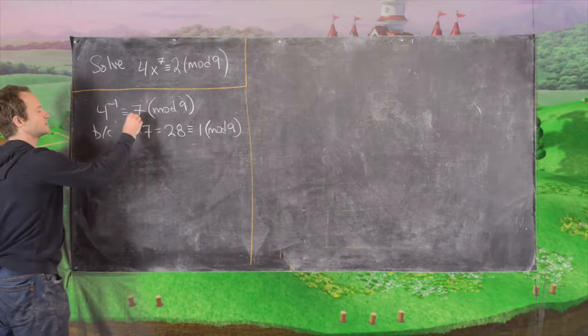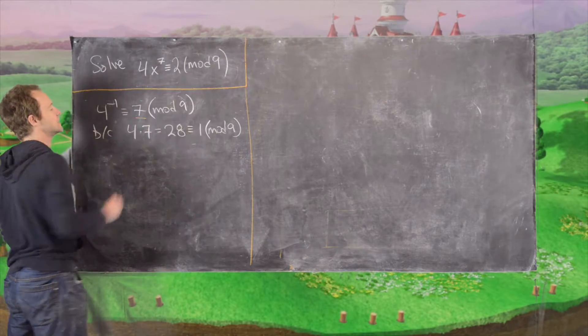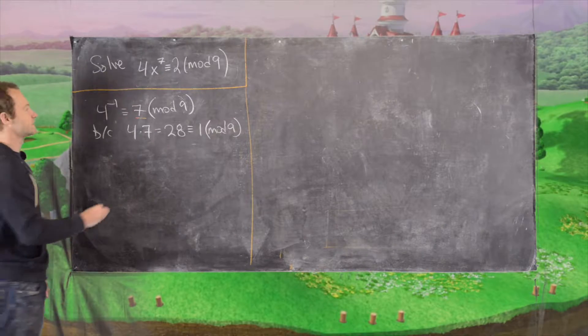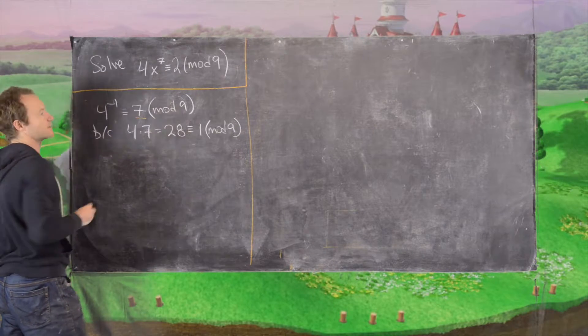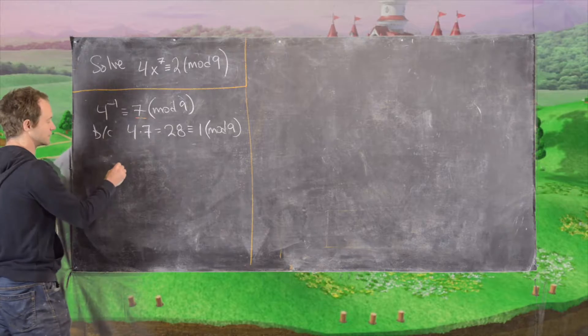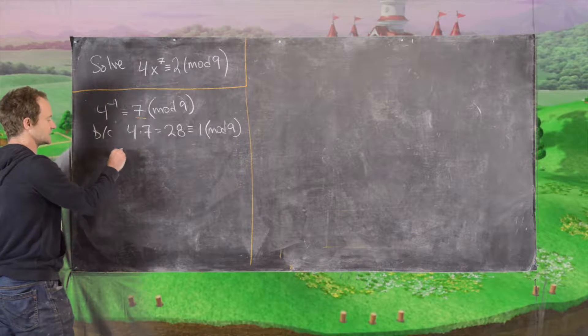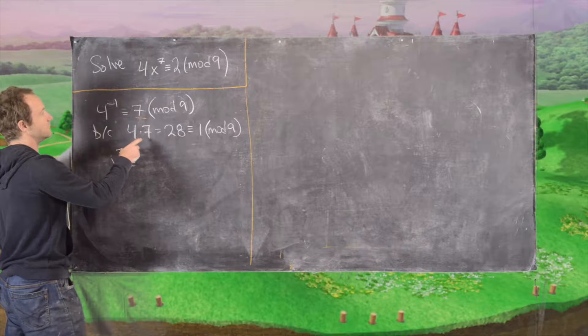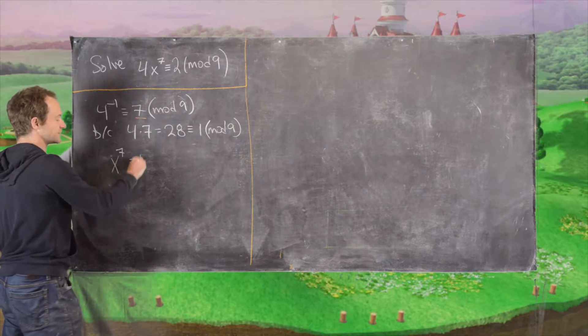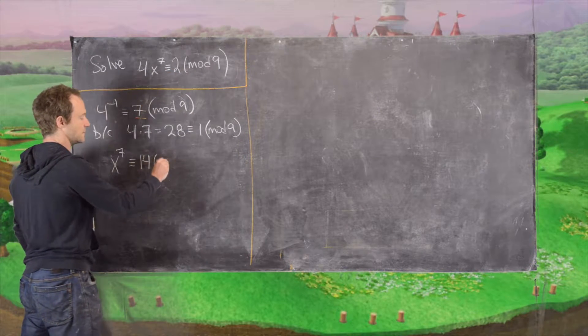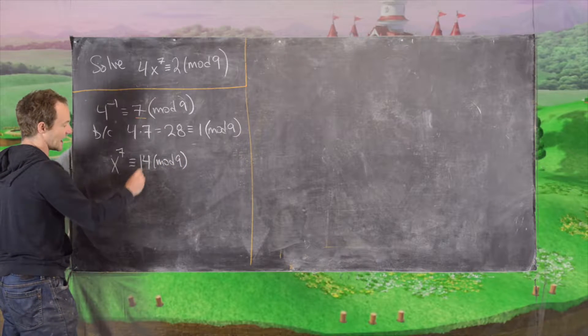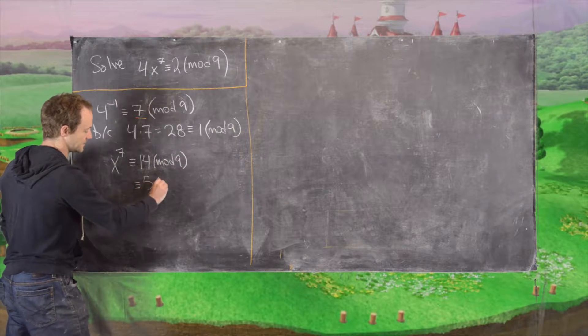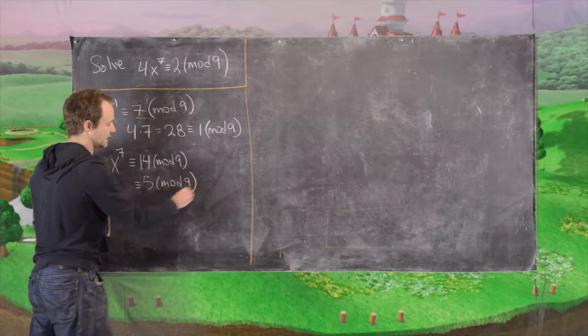So now what we'll do is multiply both sides of this equation by 7. And so that's going to give us 4 times 7 on the left hand side which we already decided was 1. So that will give us x to the 7 is congruent to, now we have 7 times 2 which is 14 mod 9, which is the same thing as 5 mod 9.